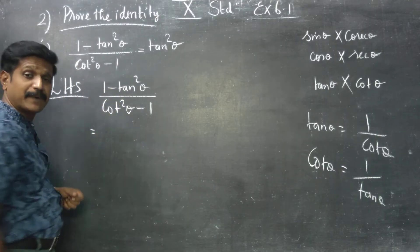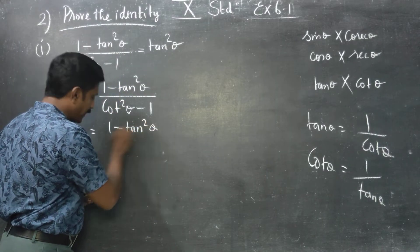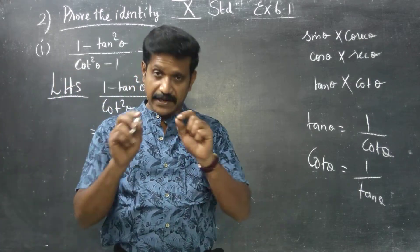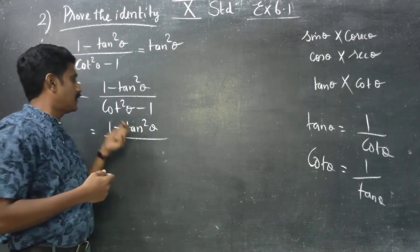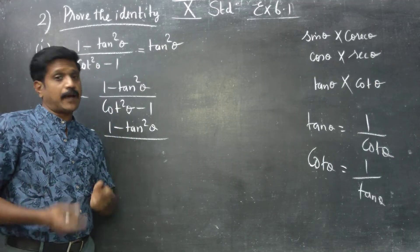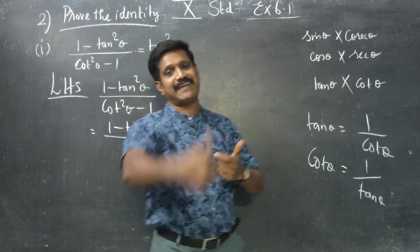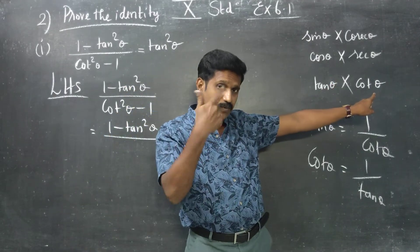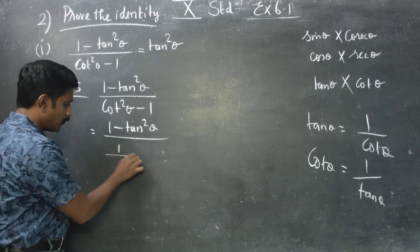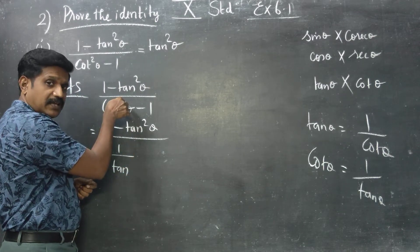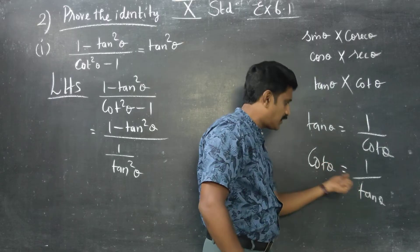In the LHS, the numerator is 1 minus tan square theta. For the denominator, cot square theta minus 1 — since cot equals 1 by tan, cot square is 1 by tan square. So the denominator becomes 1 by tan square, minus 1.